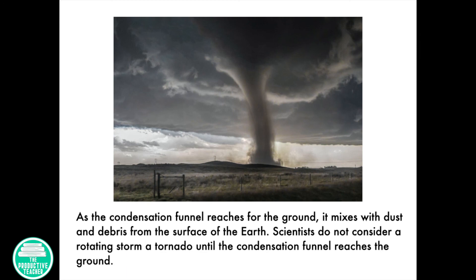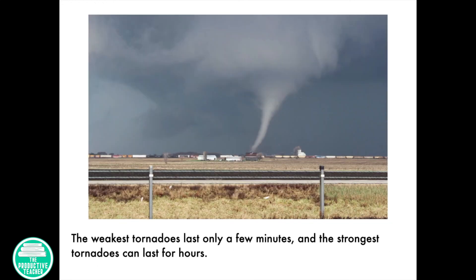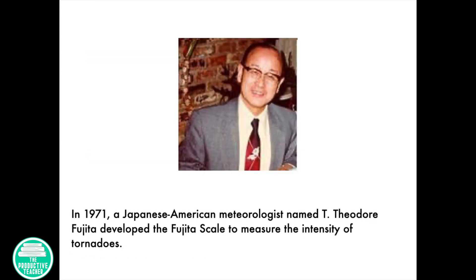Scientists do not consider a rotating storm a tornado until the condensation funnel reaches the ground. The weakest tornadoes last only a few minutes and the strongest tornadoes can last for hours. In 1971, a Japanese-American meteorologist named T. Theodore Fujita developed the Fujita scale to measure the intensity of tornadoes.